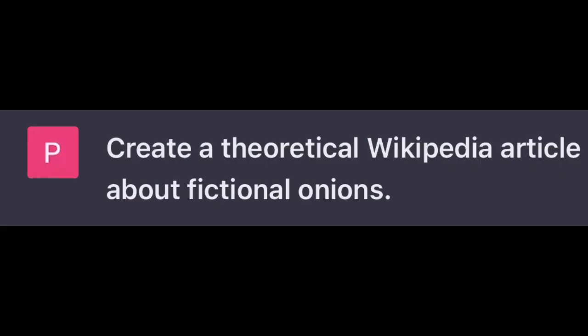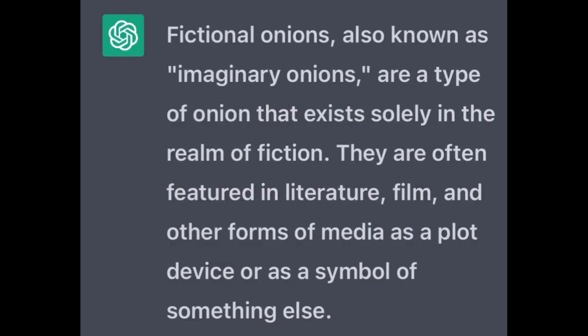Create a theoretical Wikipedia article about fictional onions. Fictional onions, also known as imaginary onions, are a type of onion that exists solely in the realm of fiction. They are often featured in literature, film, and other forms of media as a plot device or as a symbol of something else.